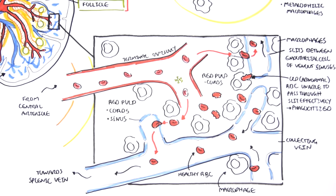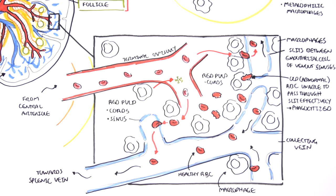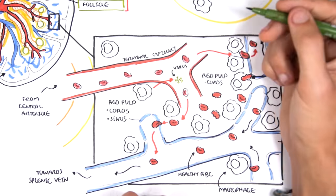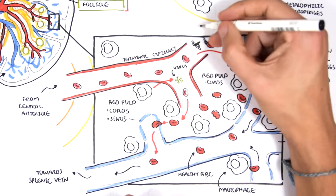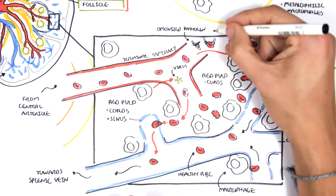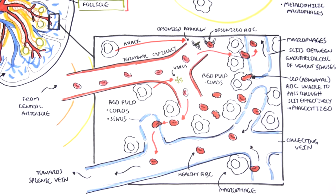Viruses as well as other pathogens can also be captured by the macrophages in the red pulp and then be presented to the cells of the white pulp. Additionally, opsonized pathogens or opsonized red blood cells — pathogens or red blood cells that are tagged by the body — are able to get destroyed by macrophages in this area. So the red pulp of the spleen is important in clearing out old and damaged red blood cells as well as pathogens.